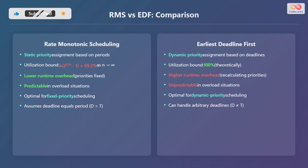In contrast, EDF uses dynamic priority assignment based on deadlines and has a theoretical utilization bound of 100%. However, it has a higher runtime overhead due to recalculating priorities and is unpredictable in overload situations. EDF is optimal for dynamic priority scheduling and can handle arbitrary deadlines where D does not equal T.